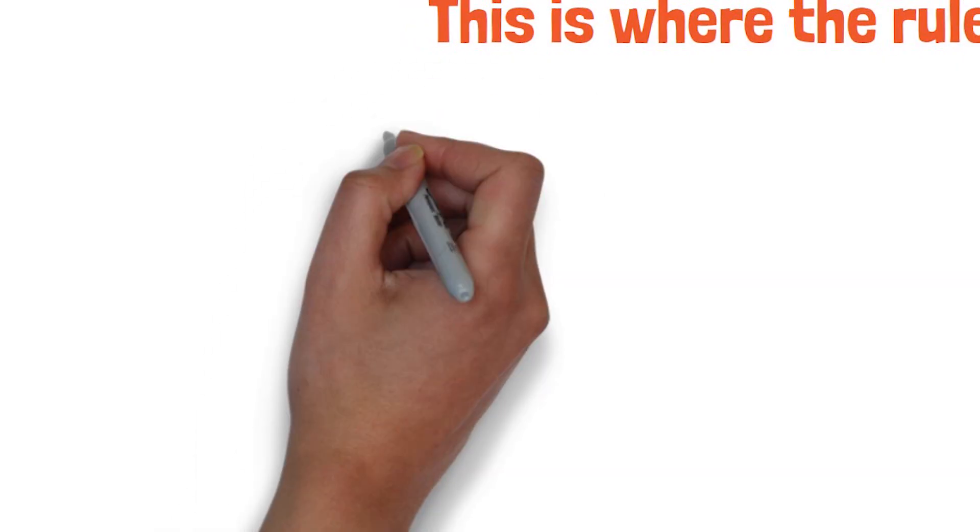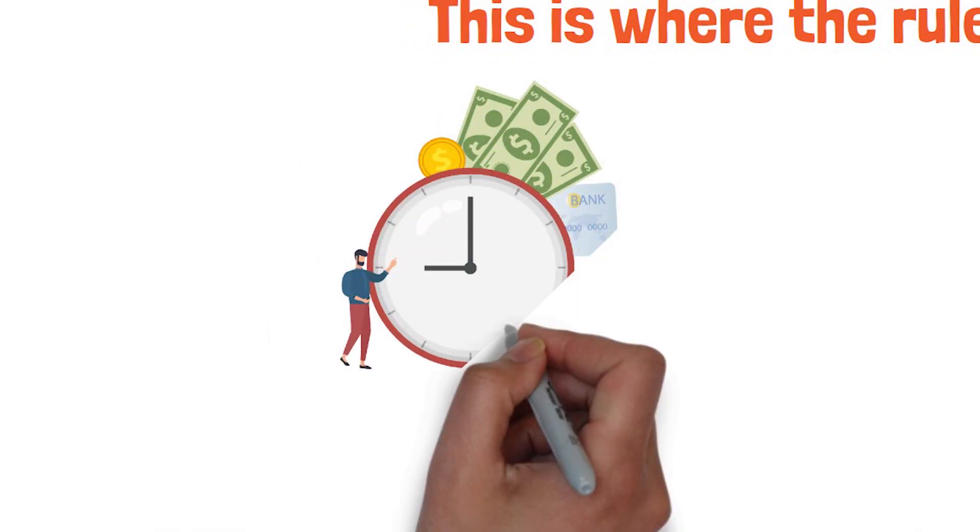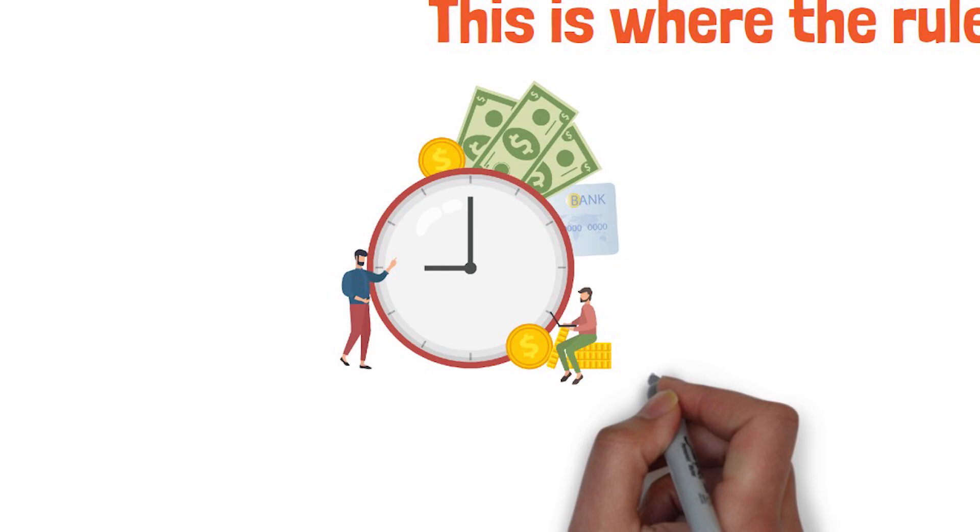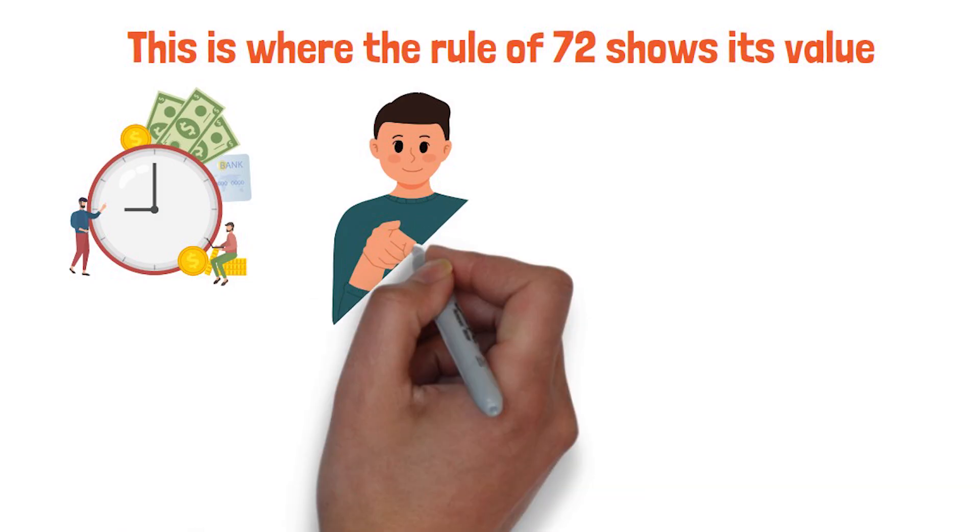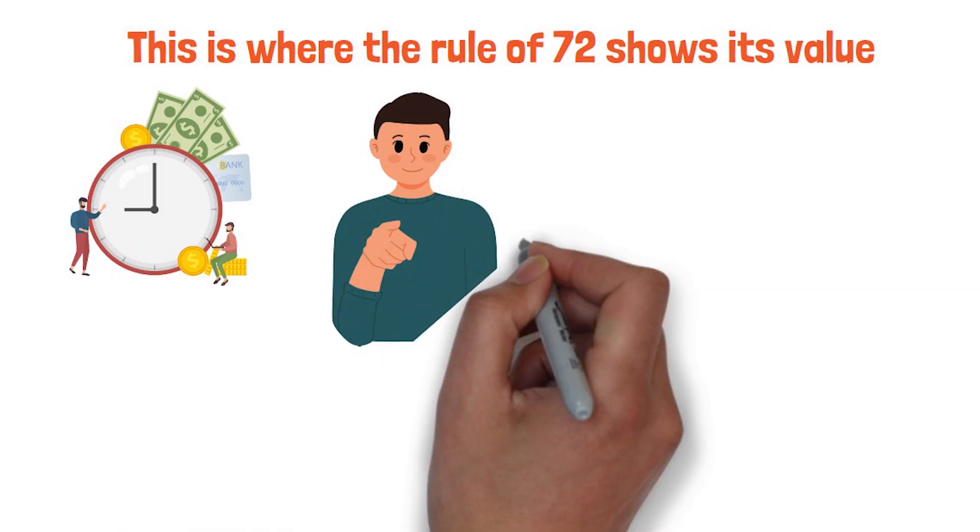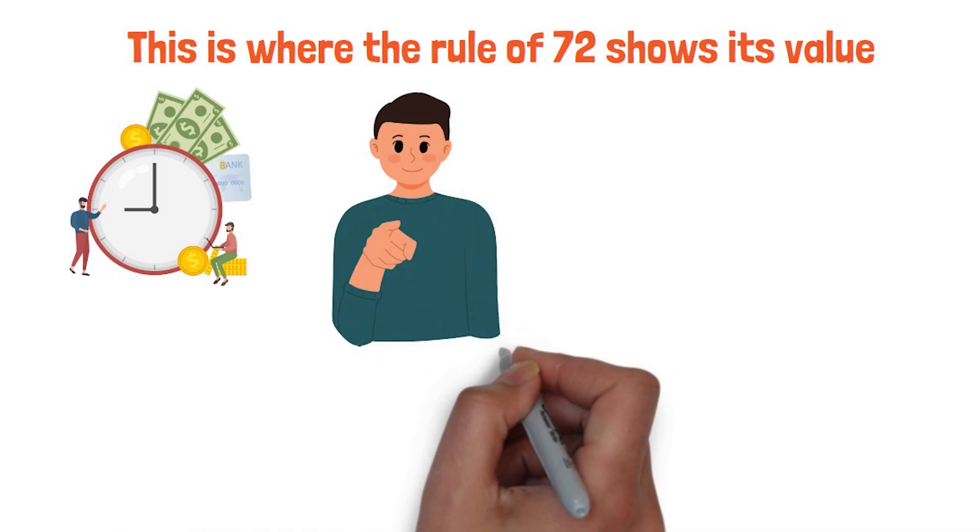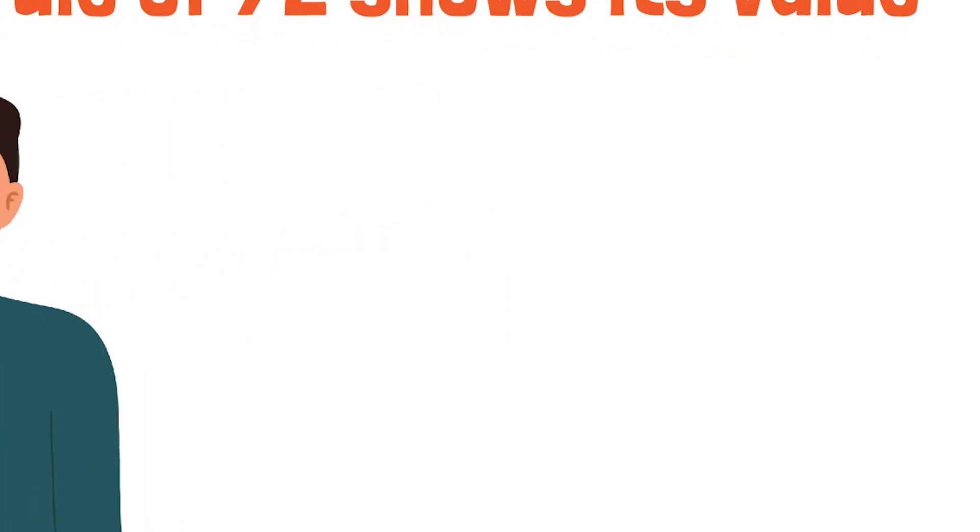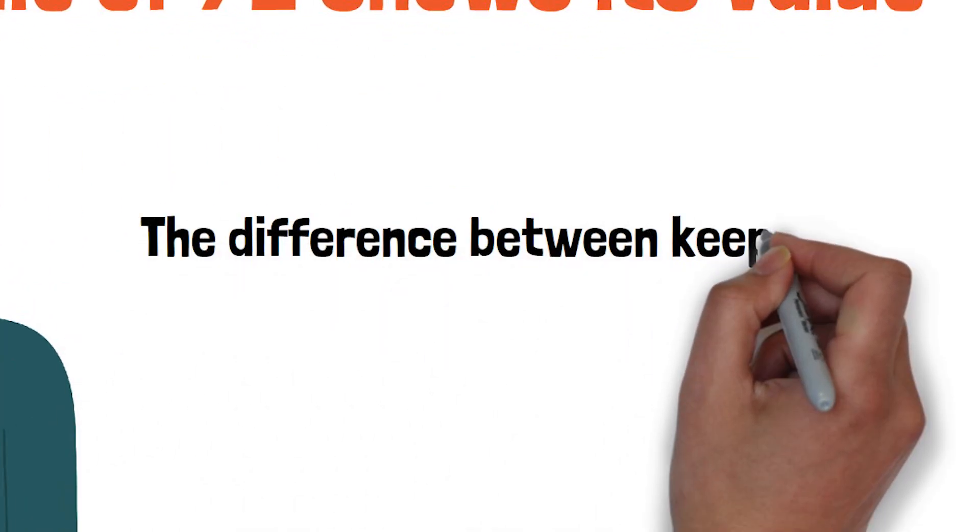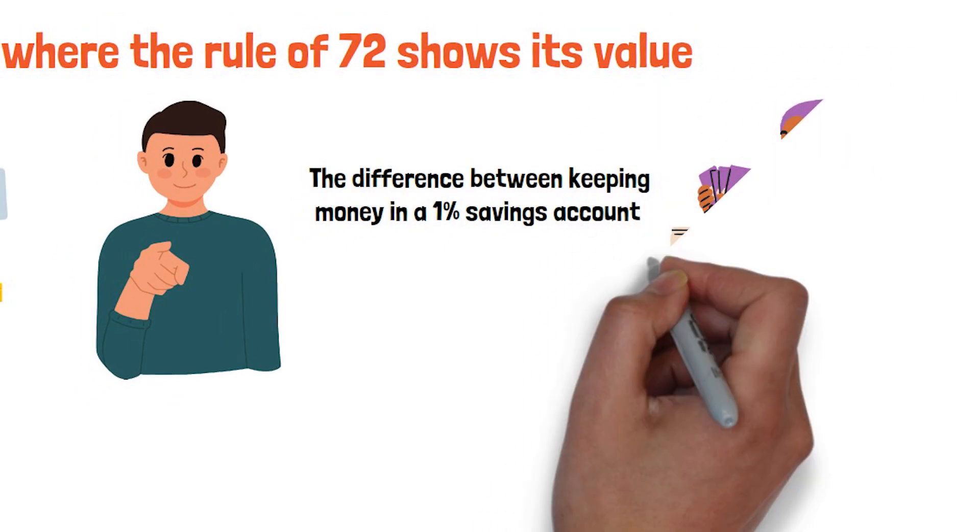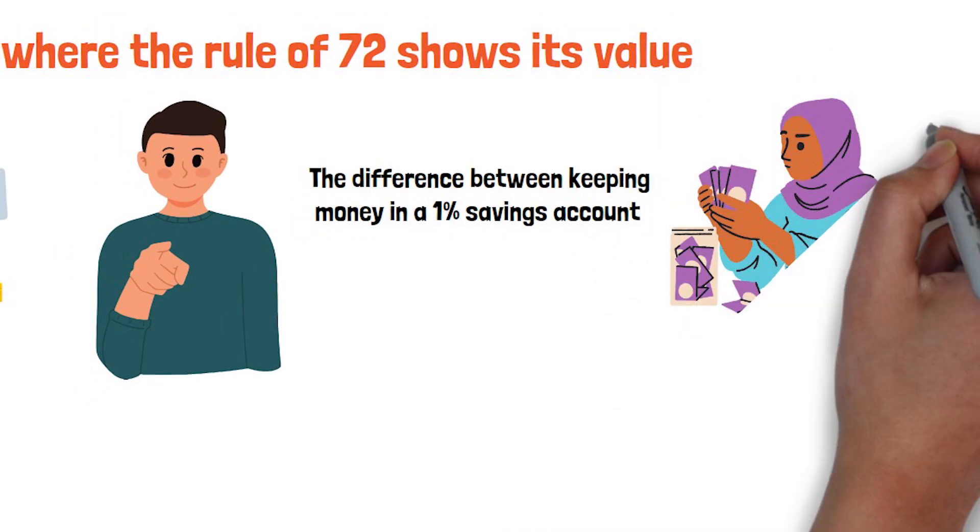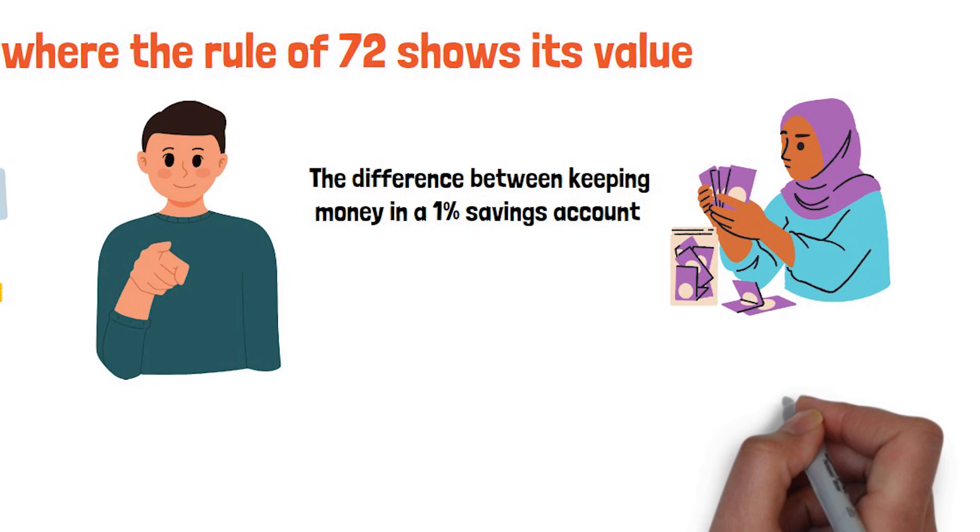You can use it to picture how different returns might unfold over time and to check whether an investment matches your personal timelines. If you aim to retire in 25 years, you can instantly estimate how many doubling cycles fit into that period and what return is needed to hit your target. The difference between keeping money in a 1% savings account, 72 years for a single double, versus earning 8%, about 9 years per double, becomes obvious over a working lifetime.